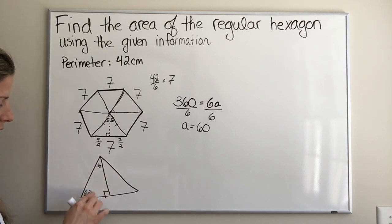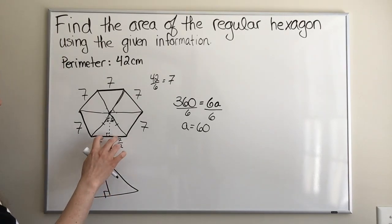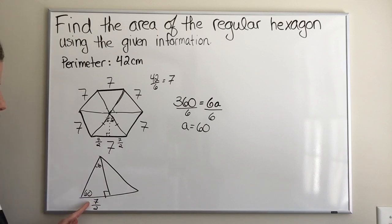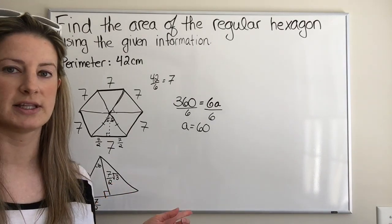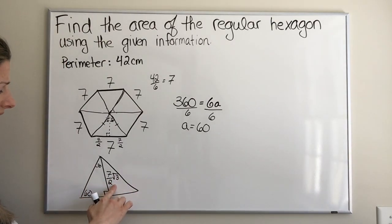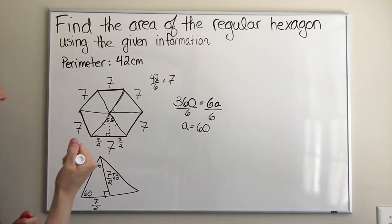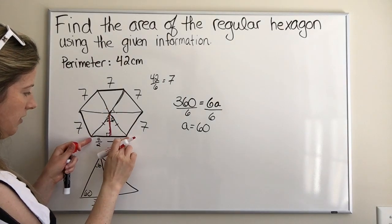We know if we know one of these side lengths — the hypotenuse, the long leg, or the short leg — we can find the other two because it's a special right triangle. We know the whole side length is seven, so half of it is seven over two. That's our short leg. To get the long leg, all we do is multiply by root three. Our goal is to find the height of this triangle — we need the base and the height.